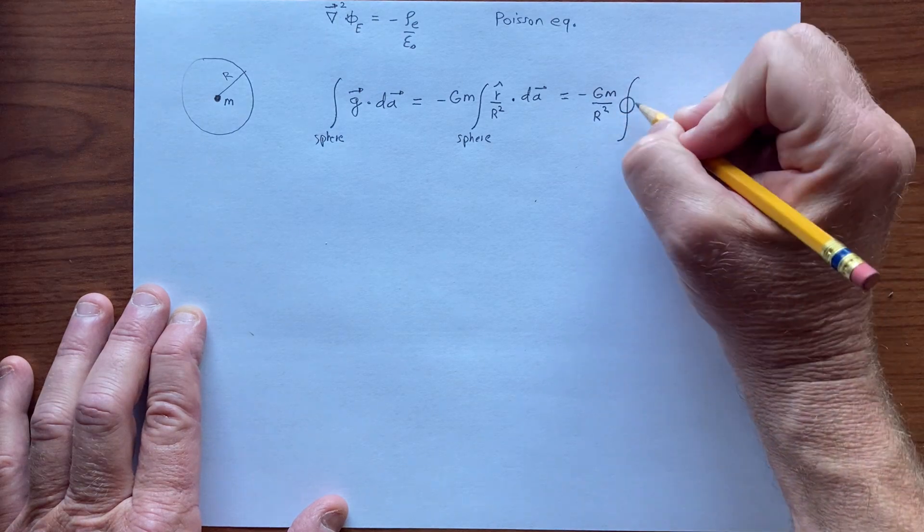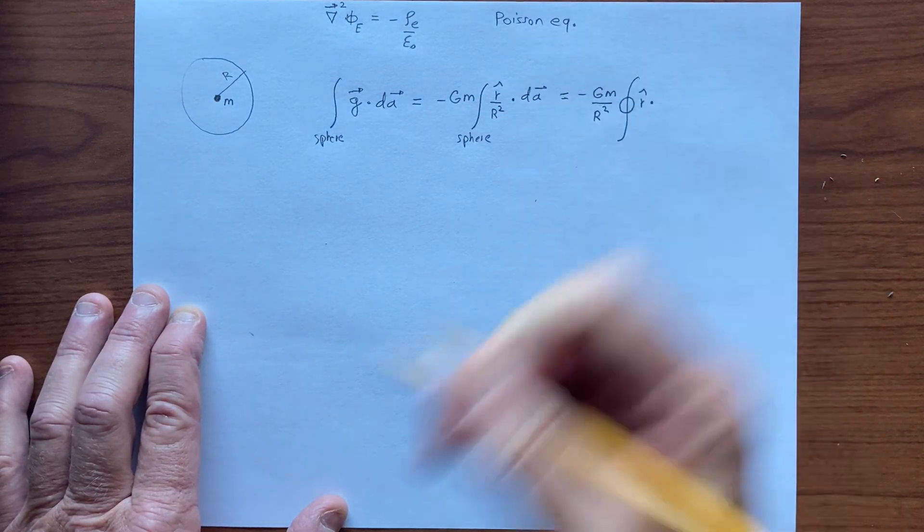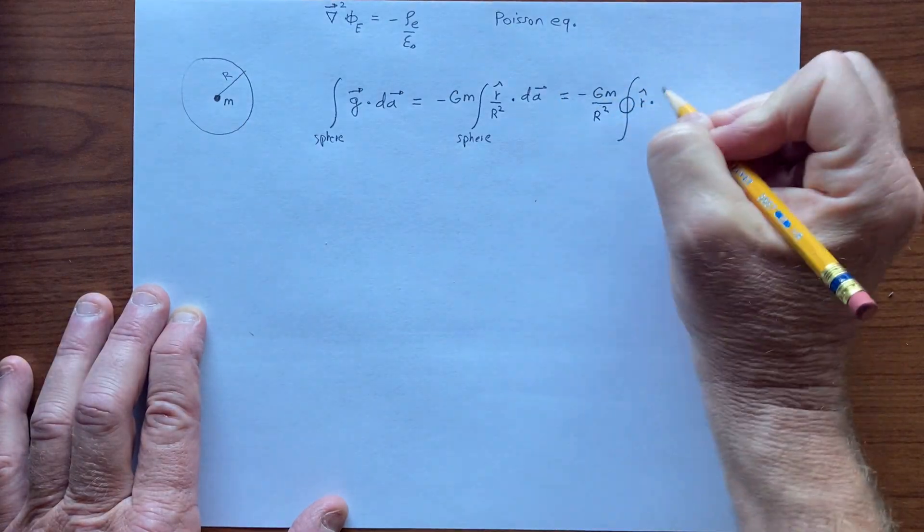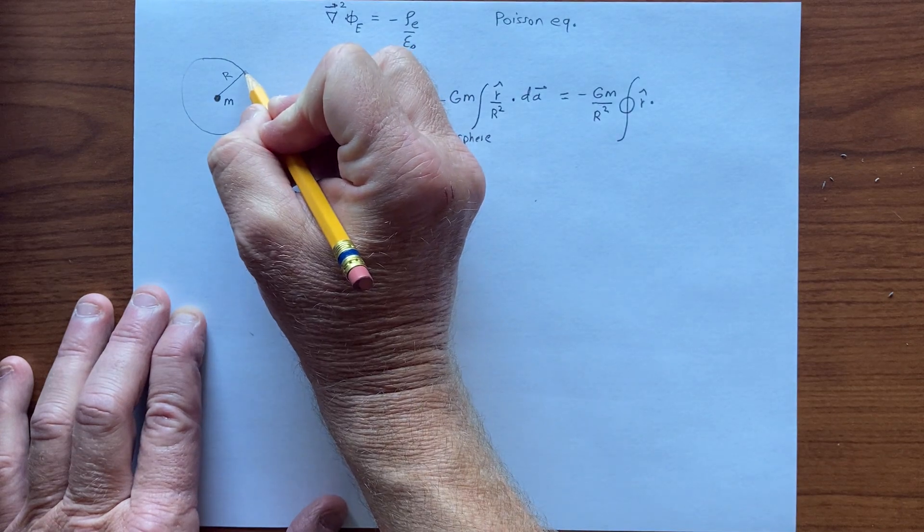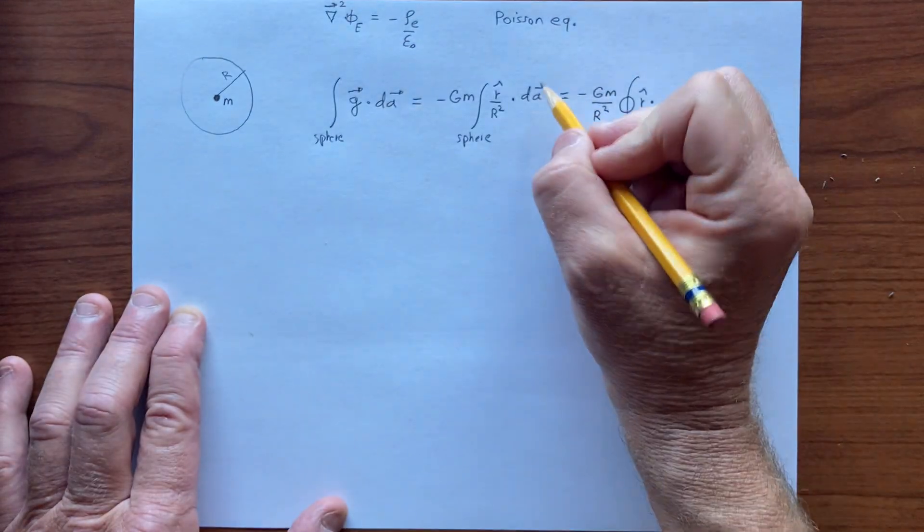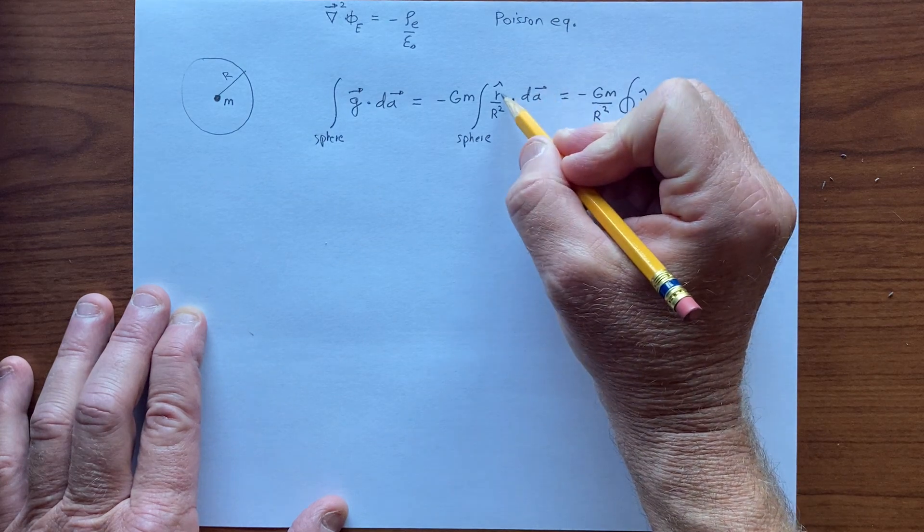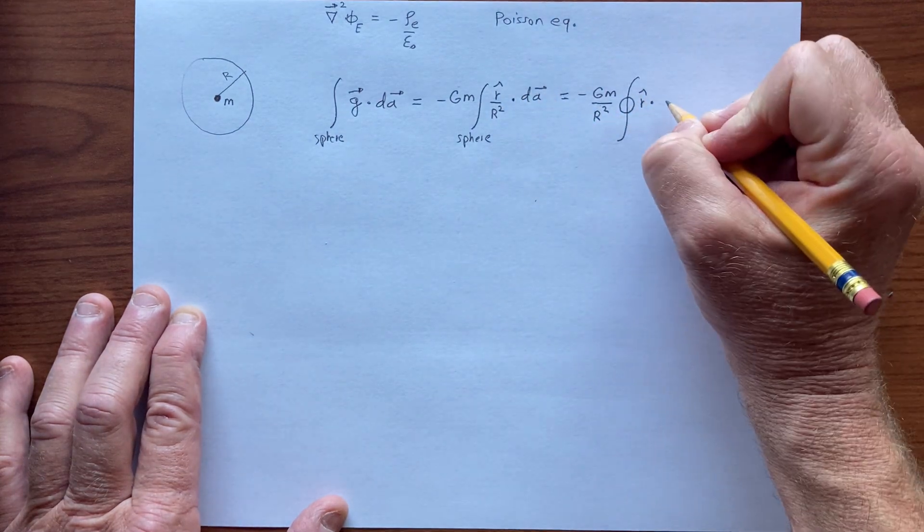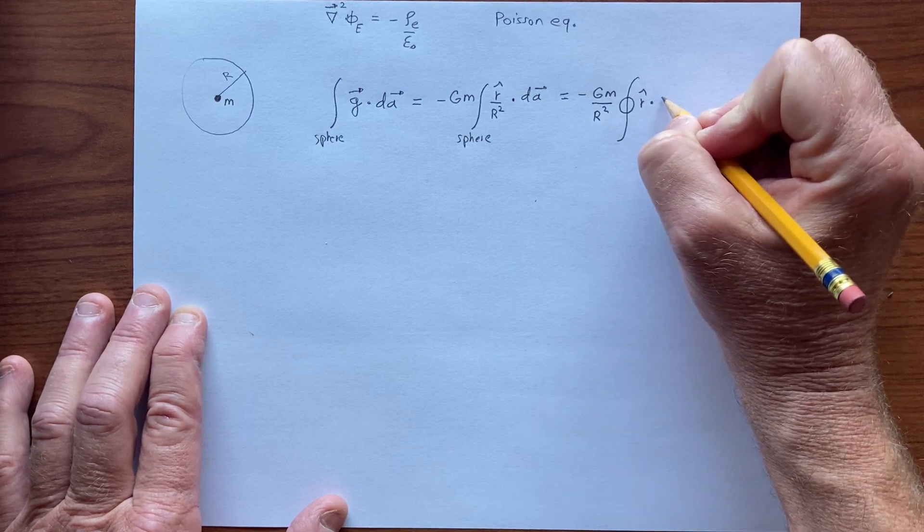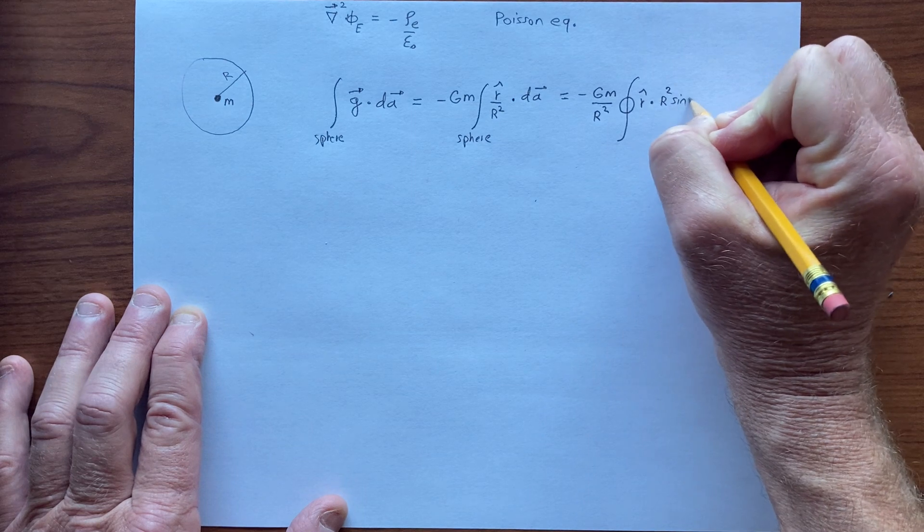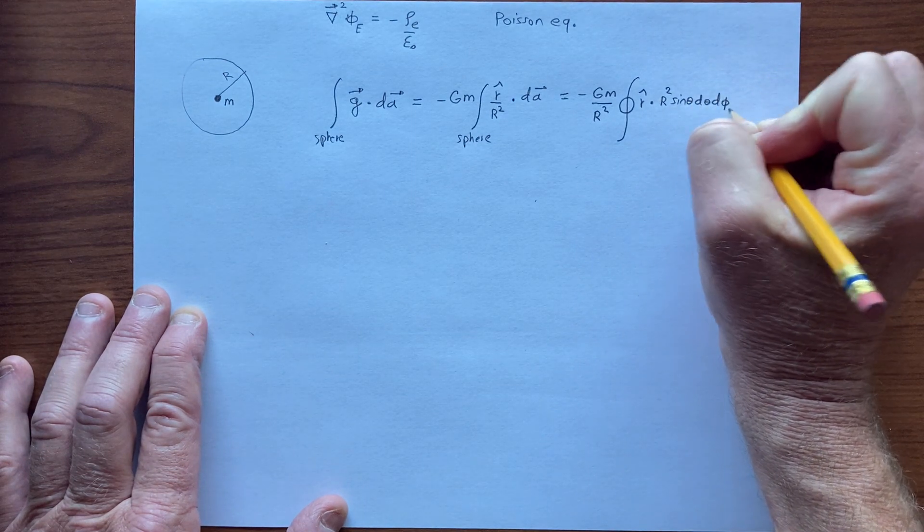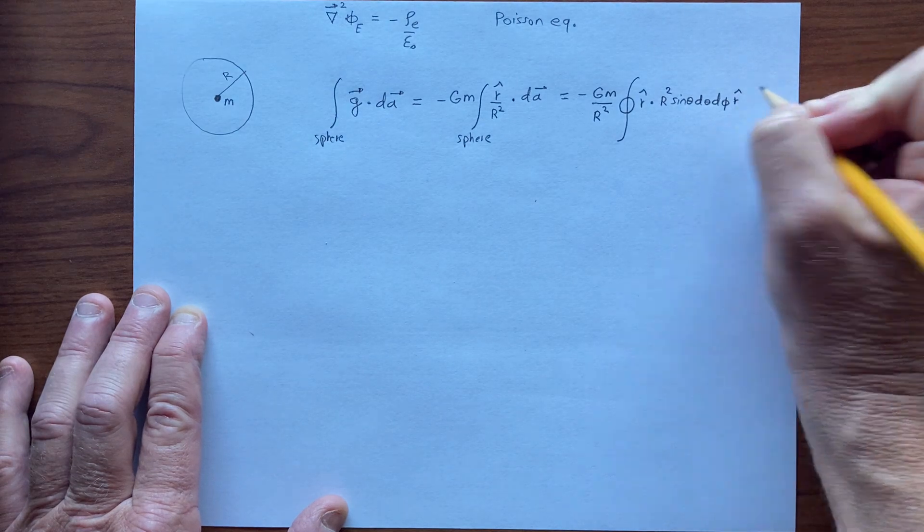gm over r squared, so we have the r hat, and then an expression for the dA. dA's are little surface elements that are also pointing, have little unit vectors pointing radially outward, so we have another r hat here. If we're precise, we have a surface element in spherical coordinates, which is r squared sine theta d theta d phi. We're integrating theta and phi, and then there's the r hat,